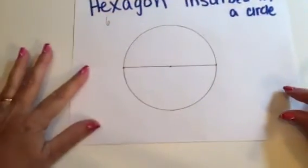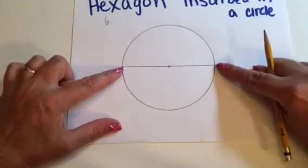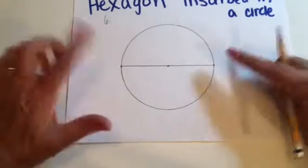Now, we've started out with a circle and a center. From there, we drew already the diameter, and the diameter has two endpoints. That's two of the six endpoints that we're going to need to create this hexagon. So we need four more.